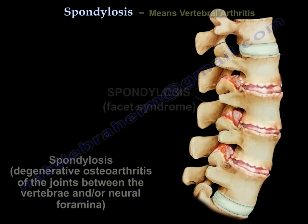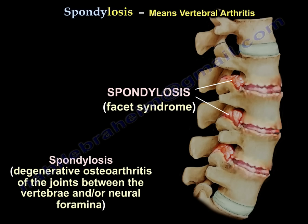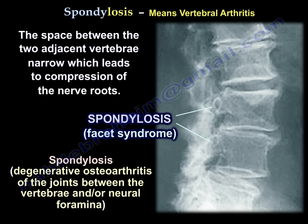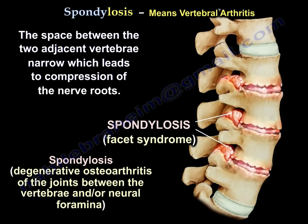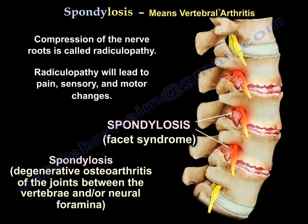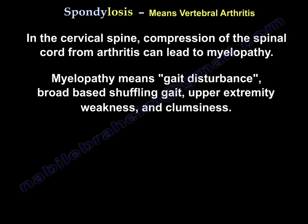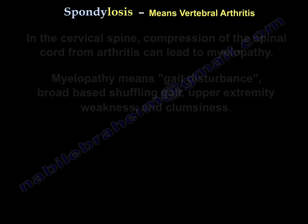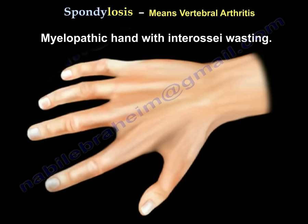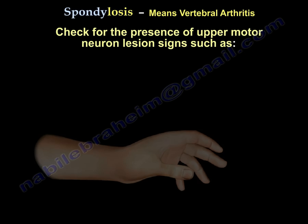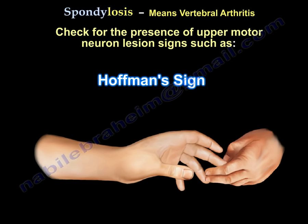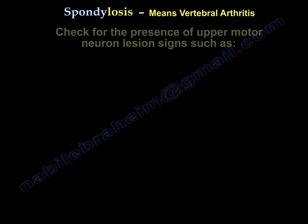Spondylosis is vertebral arthritis — degenerative arthritis of the joints between the vertebrae. It narrows the neural foramen, pinches the nerve, and causes radiculopathy. In the cervical spine, compression of the spinal cord from arthritis can lead to myelopathy — meaning gait disturbance, broad-based shuffling gait, upper extremity weakness and clumsiness, myelopathic hand with intrinsic muscle wasting, and upper motor neuron signs like Hoffmann and Babinski. You need to get an MRI of the C-spine.